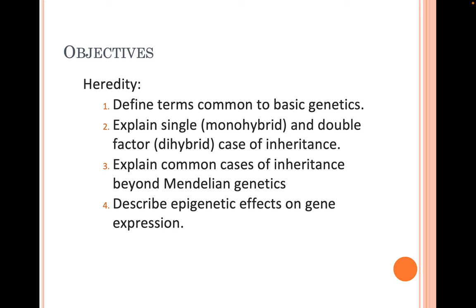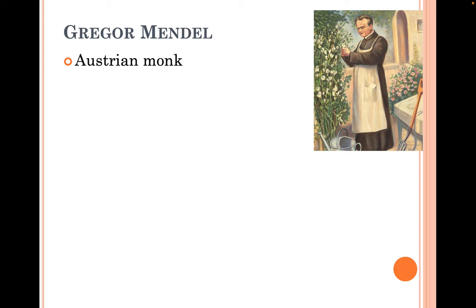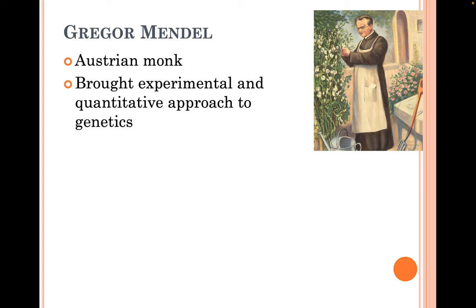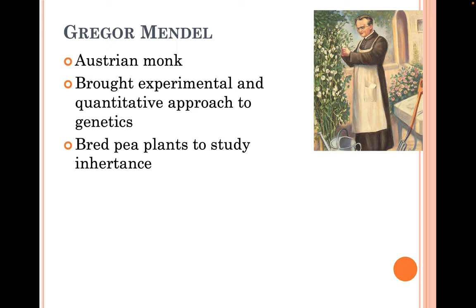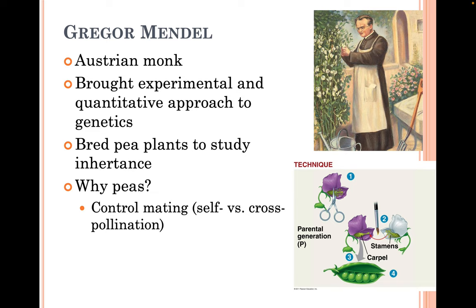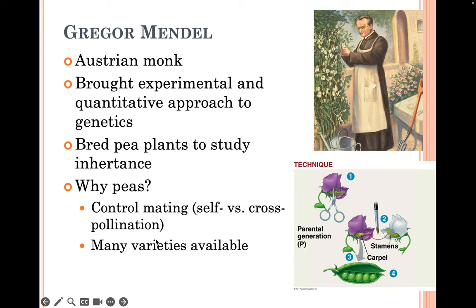First, let's talk about Gregor Mendel. Mendel was an Austrian monk who brought an experimental and quantitative approach to genetics. He bred pea plants to study patterns of inheritance. Why peas? He was able to control the mating — he could either let them self-pollinate or cross-pollinate. For cross-pollination, he used a paintbrush to carry pollen from one plant to another. There were many varieties available, and they have a short generation time, so he was able to study many generations.